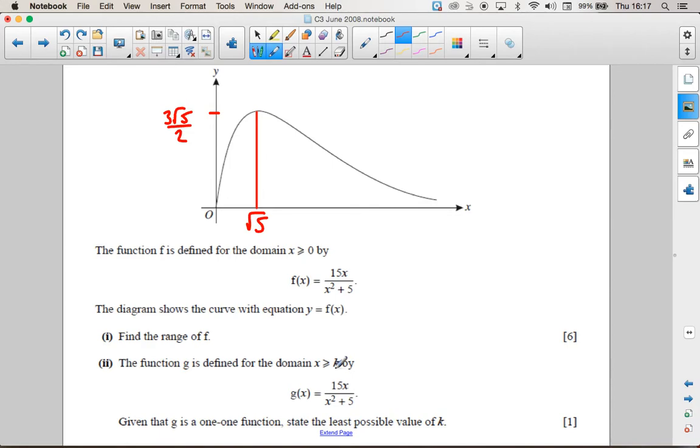So where is this a one-to-one function or where will it start being a one-to-one function? What value of k will ensure that we have a one-to-one function? And you can hopefully see from the graph that it would be a one-to-one function from here onwards.